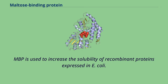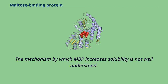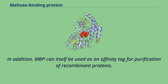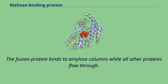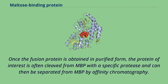MBP is used to increase the solubility of recombinant proteins expressed in E. coli. In these systems, the protein of interest is often expressed as an MBP fusion protein, preventing aggregation of the protein of interest. The mechanism by which MBP increases solubility is not well understood. In addition, MBP can itself be used as an affinity tag for purification of recombinant protein. The fusion protein binds to amylose columns while all other proteins flow through, and can be purified by eluting the column with maltose. Once the fusion protein is obtained in purified form, the protein of interest is often cleaved from MBP with a specific protease and then separated from MBP by affinity chromatography.